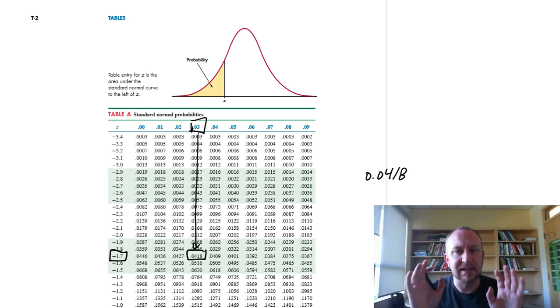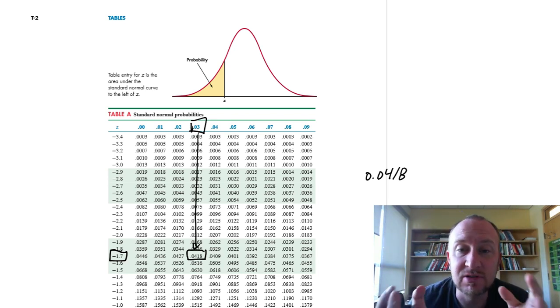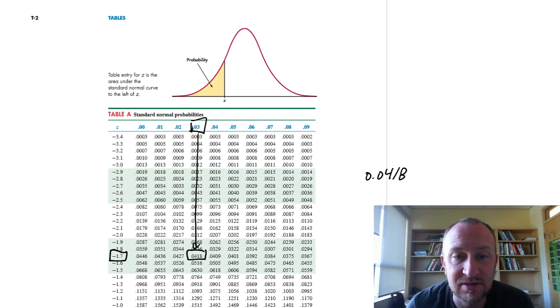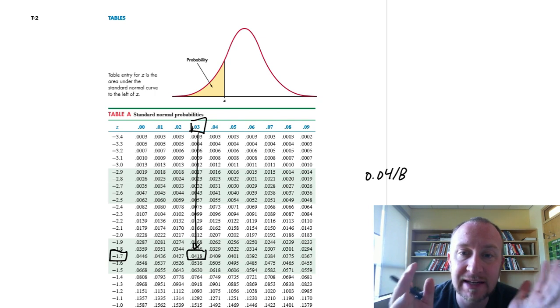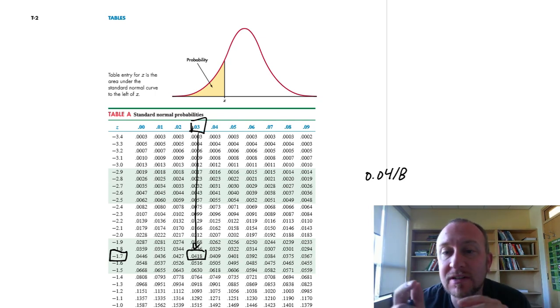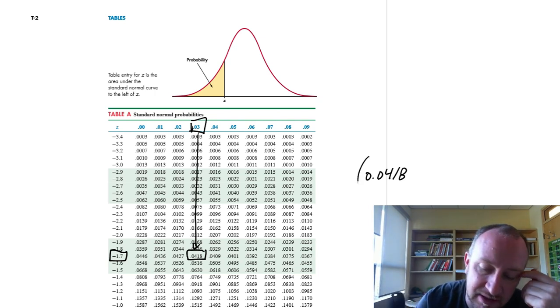Now, a very common mistake when we're dealing with a two-tail test is that students will very often give that probability as their final answer, as their p-value. We always have to remember when you're performing a two-tail test, we want to always double that probability. So we want to multiply this by 2.